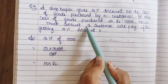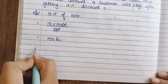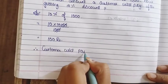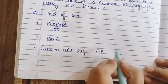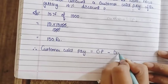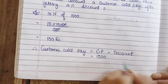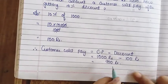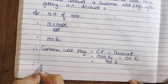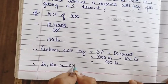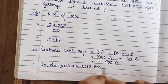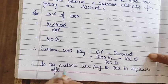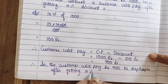But the question is: how much amount will the customer pay? Therefore, customer will pay equals cost price minus discount. You have done shopping of 1,000 rupees minus 100 rupees discount. So the answer is 900 rupees. The customer will pay rupees 900 to the shopkeeper after getting 10 percent discount.